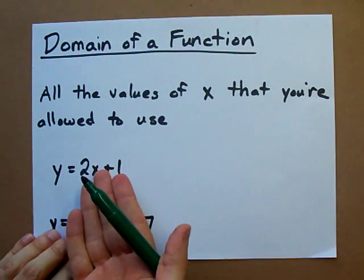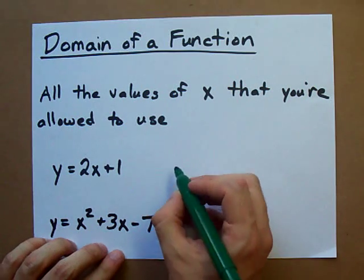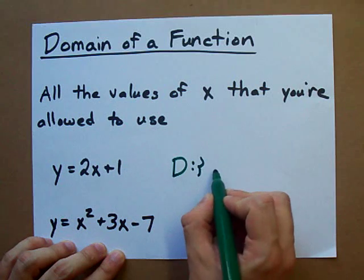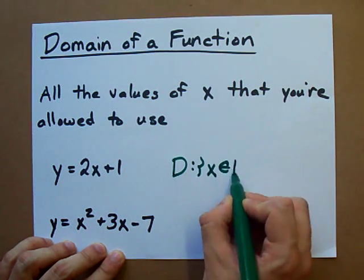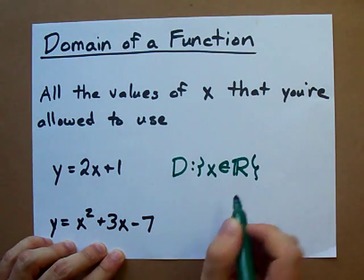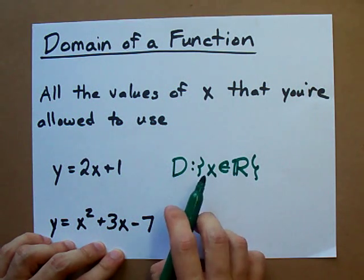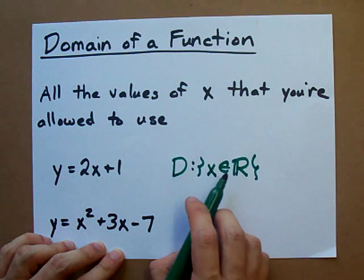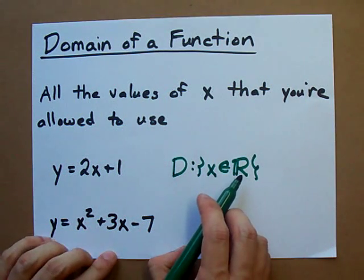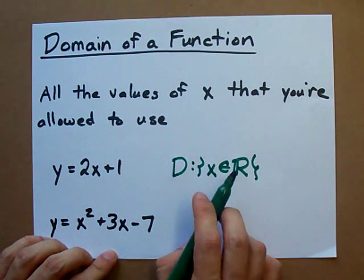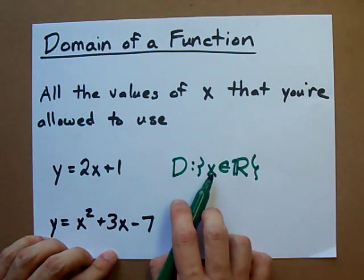To say that we can plug in any number, we say that the domain of the function is all real numbers. Now this is the mathematician's way of saying all real numbers: X is an element of all real numbers. It's weird but you're going to have to accept this is just how we write X can be anything we want.